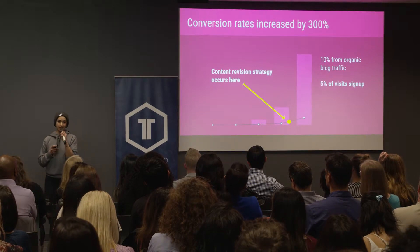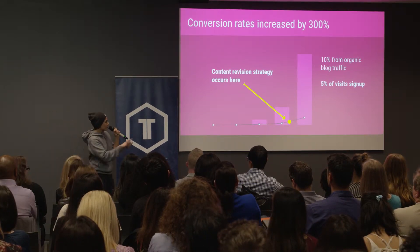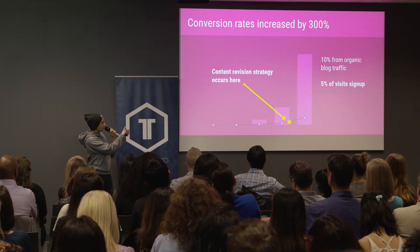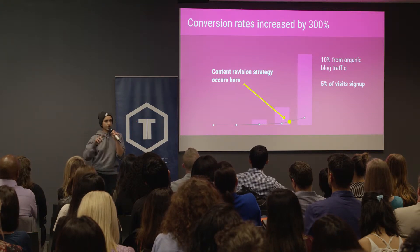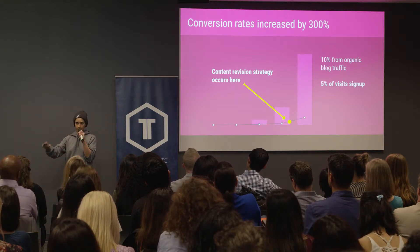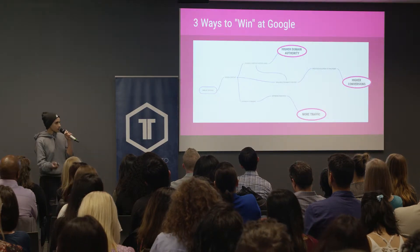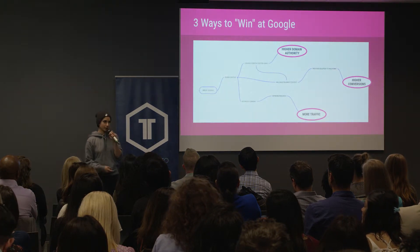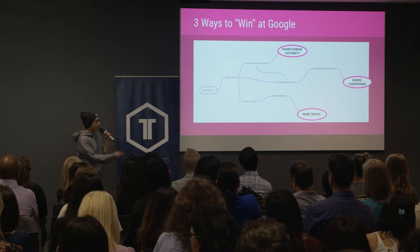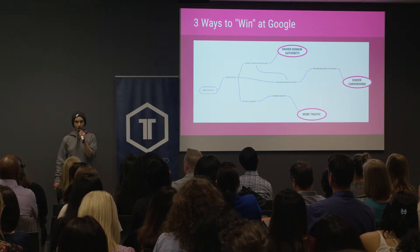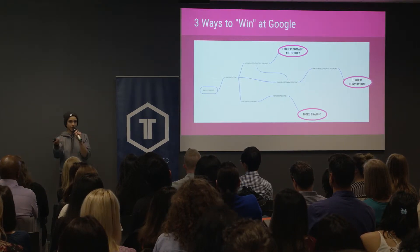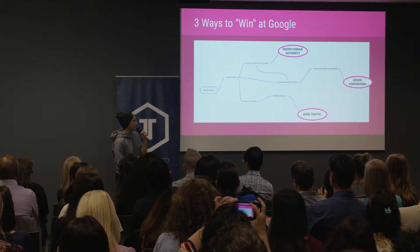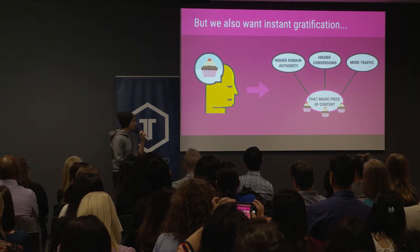This wasn't always the case — we changed our strategy at the end of 2017 and started to see better traffic and better leads. We focus on what we're good at: organic traffic and SEO, identifying what keywords people are ranking for and actually searching for. To win at Google, there are really three main goals: higher domain authority, higher conversions, and more traffic.